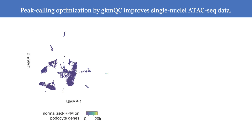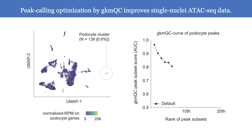Finally, GKMQC furthermore optimized the peak calling, which improves single-cell ATAC data with sparse read mapping. We focused on the rare cell type of kidney called podocytes, which are the main players of kidney filtration physiology. Looking at the GKMQC curve of a podocyte peak, the last peak subset has a higher AUC near point A, meaning the peak is under-called due to limited read coverage.